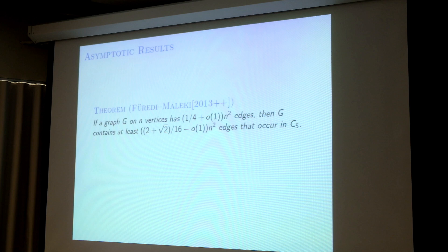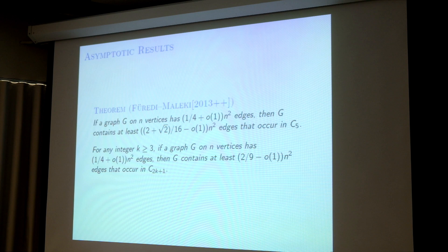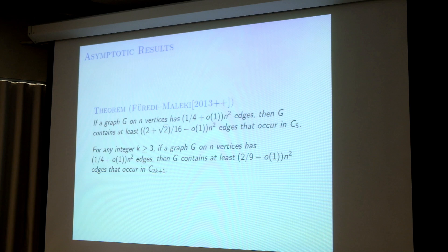What about for longer odd cycles? For longer odd cycles, Freddie and Malachi show the same type of asymptotic result — the conjecture is true asymptotically. For any integer k ≥ 3, meaning longer odd cycles than C5: if a graph G on n vertices has edge density 1/4 + o(1), then G contains at least 2/(2k+1) - o(1) times n² edges that occur in C_{2k+1} — say C7, C9, at least of length 7.